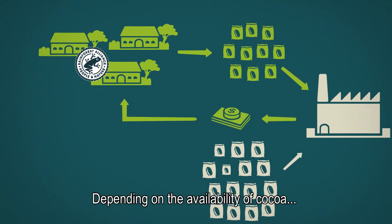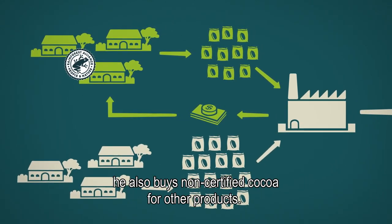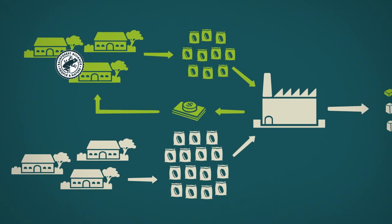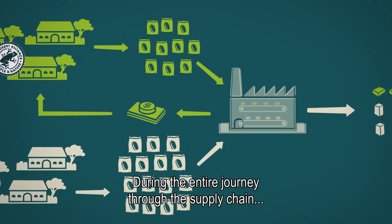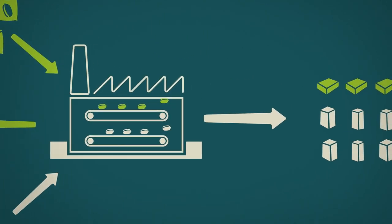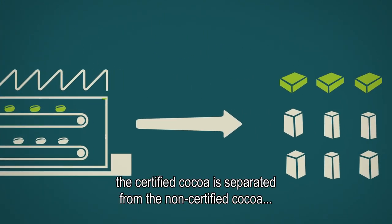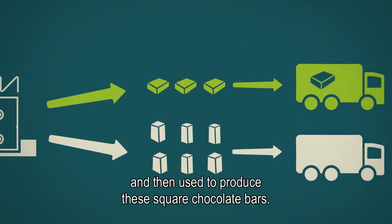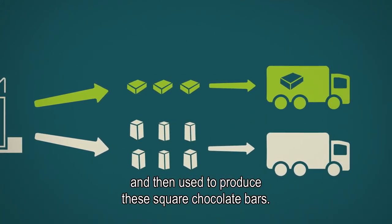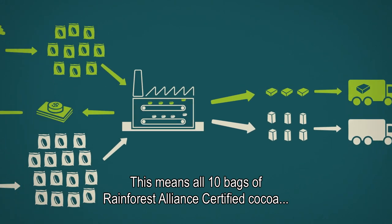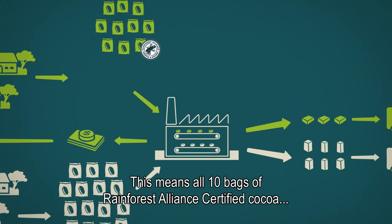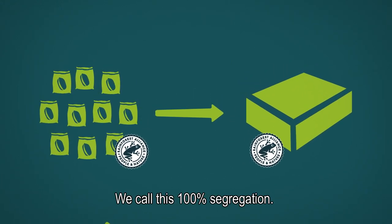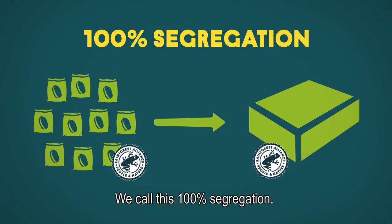Depending on the availability of cocoa, he also buys non-certified cocoa for other products. During the entire journey through the supply chain, the certified cocoa is separated from the non-certified cocoa and then used to produce these square chocolate bars. This means all 10 bags of Rainforest Alliance certified cocoa are inside the square chocolate bars. We call this 100% segregation.